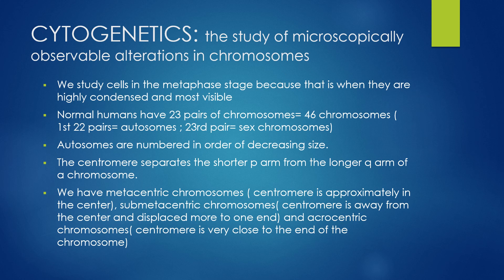Now we are entering the world of cytogenetics — the study of microscopically observable alterations in chromosomes. We study cells in the metaphase stage because that is when they are highly condensed and most easily visible. Normal humans have 23 pairs of chromosomes, giving a total of 46. This is divided into 22 pairs of autosomes and our 23rd pair being our sex chromosomes, X or Y. Autosomes are numbered in order of decreasing size. The centromere separates the shorter p-arm from the longer q-arm. Think of the French word petite to remember that p stands for short.